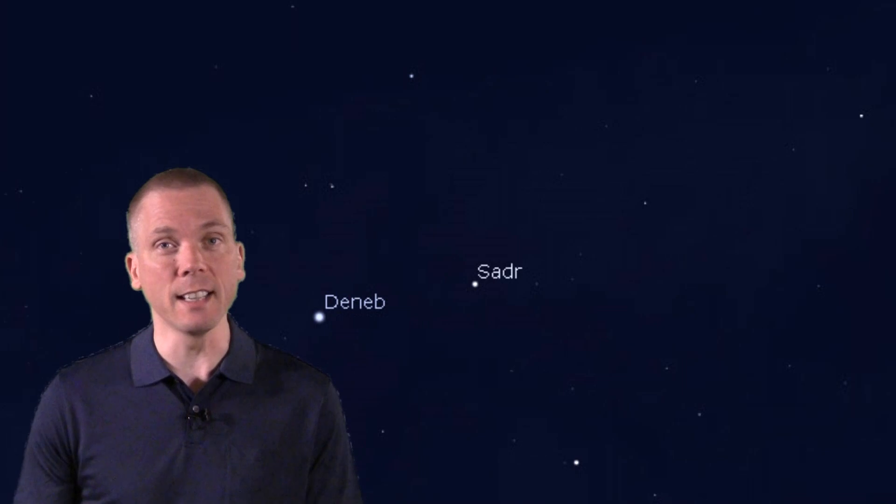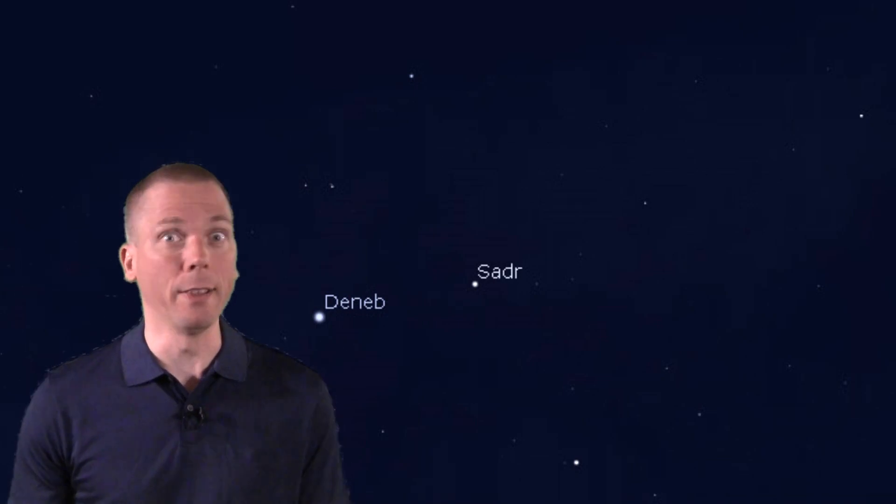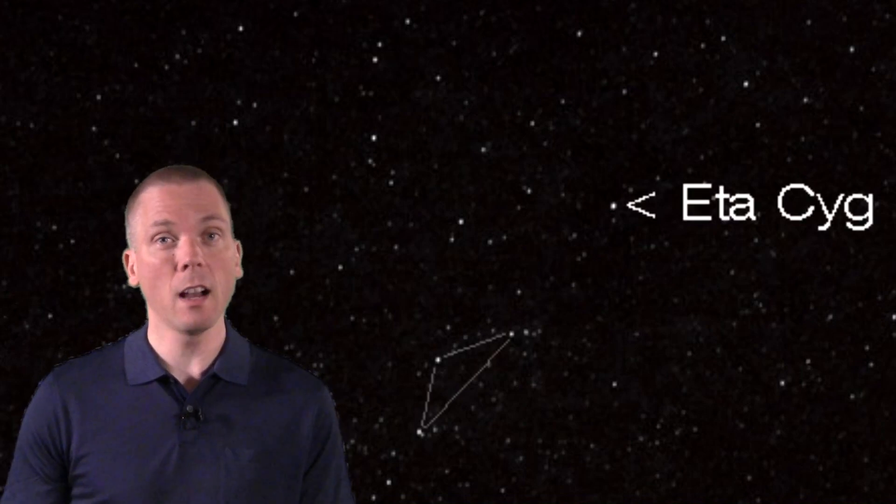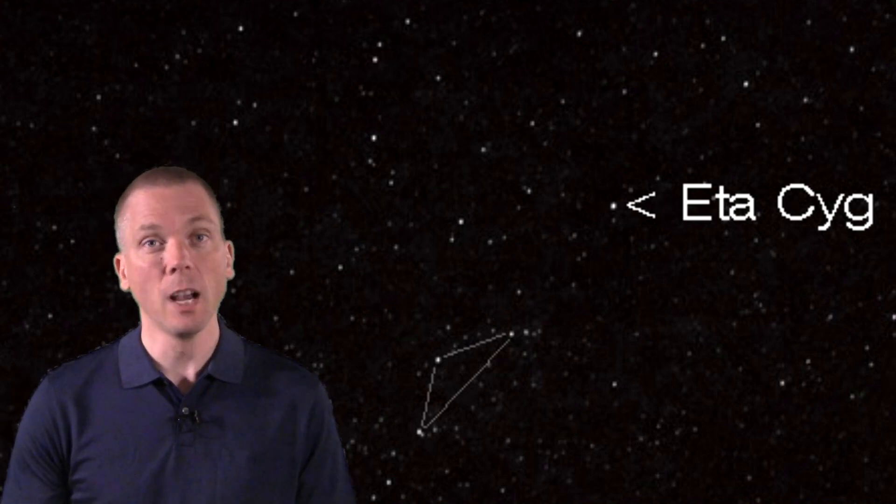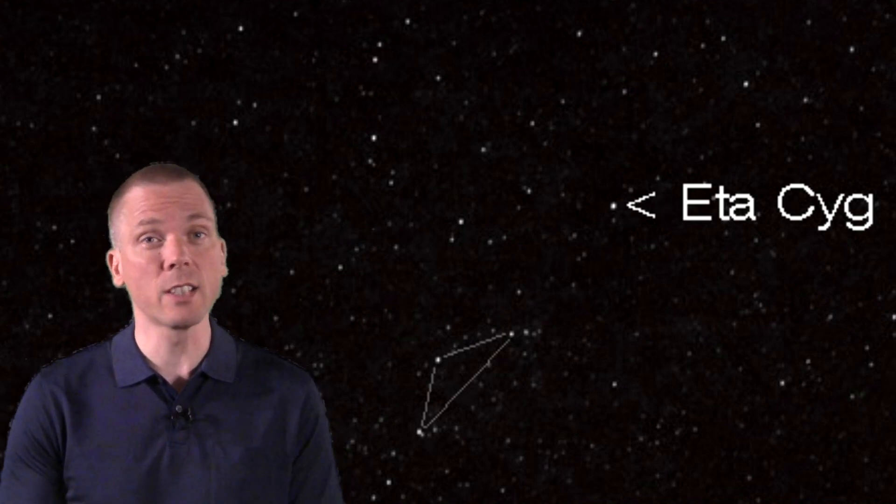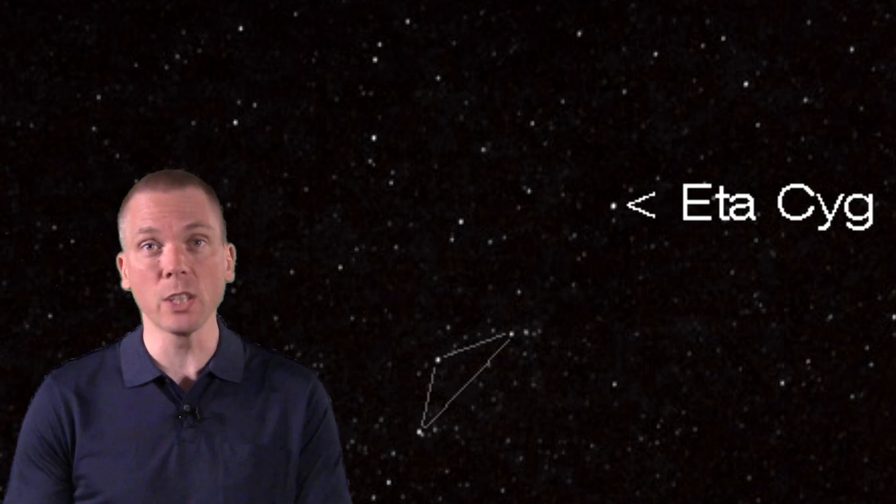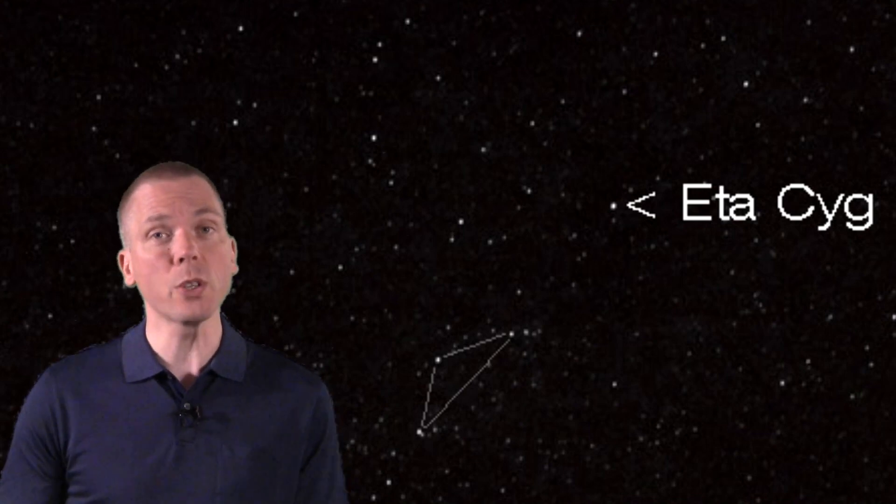We're going to go from Eta Cygni in a direction where there's not much that's bright and nearby. With some magnification and centering Eta, you'll see this grouping of three stars, just slightly off the Sadr-Albireo line, in the direction of Sadr. Of this triangle that consists of 27, 28, and 29 Cygni, go to the closest one here. That's 27 Cygni.